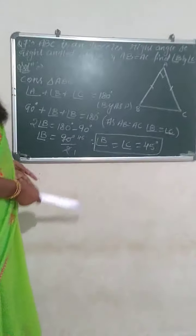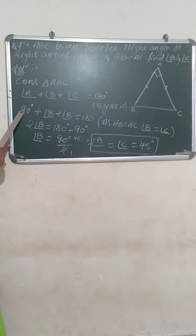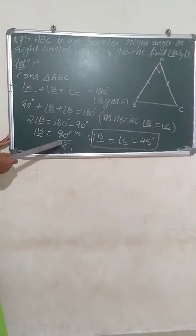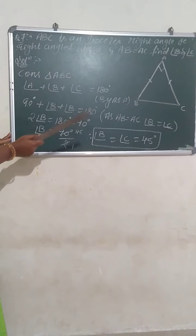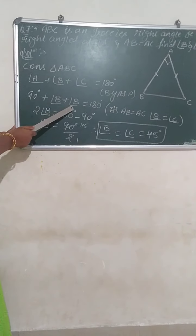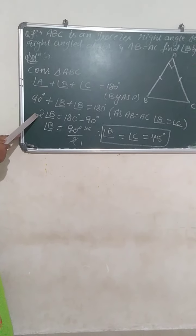Angle B is equal to angle C, why? Because AB is equal to AC. So the angles opposite to the equal sides are equal. Hence angle B equals angle C. What I am replacing is angle C by angle B. Now 90 degrees when it goes to the other side becomes negative. Hence when you subtract 180 minus 90, you get 90 degrees equals two angle B.